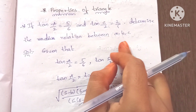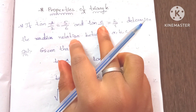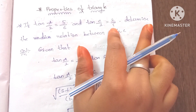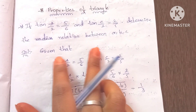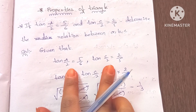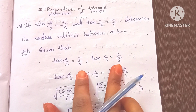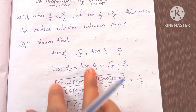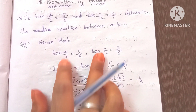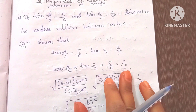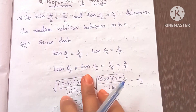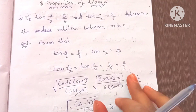I will find two equations for support. Given tan(A/2) is equal to 5/6 and tan(C/2) is equal to 2/5. We will find the left hand side and right hand side. So tan(A/2) into tan(C/2) is equal to 5/6 into 2/5.